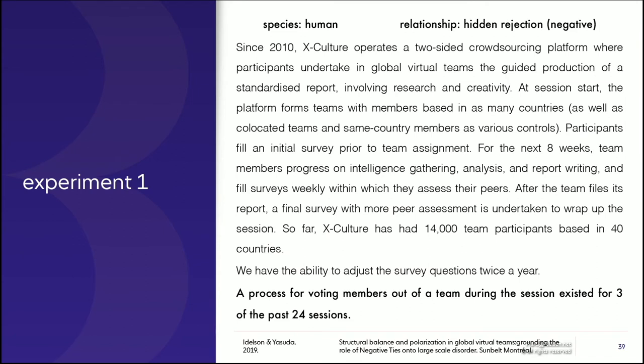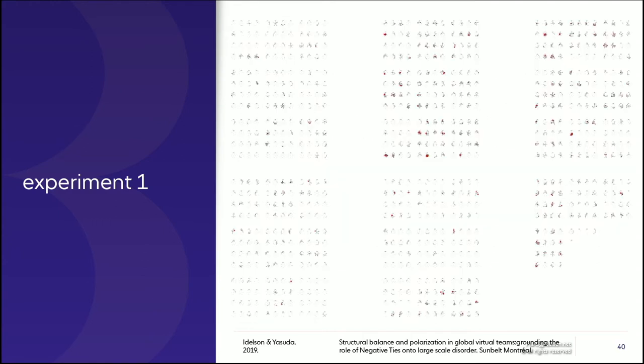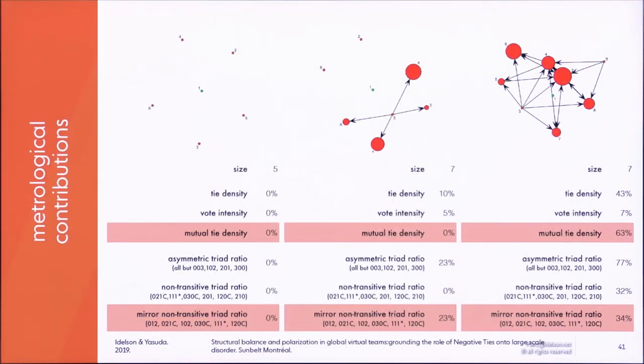So the first experiment I did is based on three cohorts, wherein X-Culture asked students if they would like to vote to exclude a team member. So this is a typical negative relationship. And only three of the past 24 sessions actually had this feature. These are actually all the teams of these three cohorts—there were 900 or so teams. And of course, it's not really legible there, but what you can see is that most of them just had dots, and those are the teams where nobody voted anyone out.